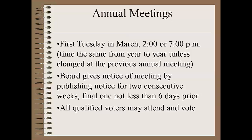Annual meetings are held on the first Tuesday in March each year. The law is very specific: these meetings are either at 2 o'clock p.m. or 7 o'clock p.m. There are only one or sometimes two items of business for the annual meeting. The primary item of business is to elect someone to the one or two seats on the board whose terms expire that year. The second item, if desired, is voting to change the time of the next year's meeting. If no vote is held, the time remains the same as the current year. You can vote to change the time from 2 o'clock to 7 o'clock p.m. or from 7 o'clock to 2 o'clock p.m.